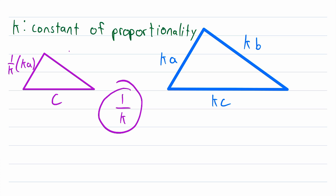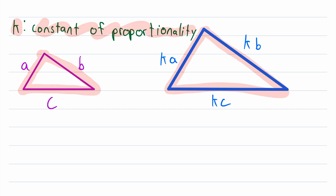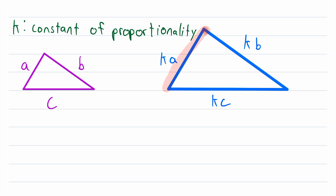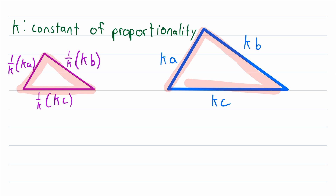Similarly, with side length B, that's 1 over K — the constant of proportionality — multiplied by the corresponding side length in the blue triangle. And then with C, C is equal to 1 over K multiplied by K times C. So we could say that the sides of the blue triangle are proportional to the sides of the purple triangle with constant of proportionality K, because the side lengths of the blue triangle are equal to K times the corresponding side lengths of the purple triangle. Or, we could say that the sides of the purple triangle are proportional to the sides of the blue triangle with constant of proportionality 1 over K.